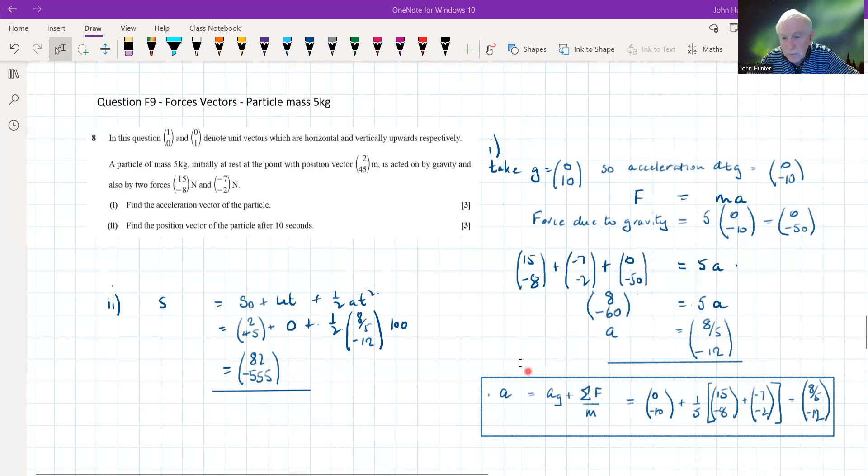We might also say we could have actually looked at this a different way and said the acceleration is the sum of two accelerations. They're vectors, so we can add them together. We've got the acceleration due to gravity and the acceleration due to the two forces. Acceleration due to gravity we've said is this. The acceleration due to the forces is going to be the sum of those forces divided by the mass. So that would be one fifth of the sum of these two. If we work all that through, we get 8 fifths minus 12, exactly the same, obviously. But we've just kind of looked at it slightly differently.